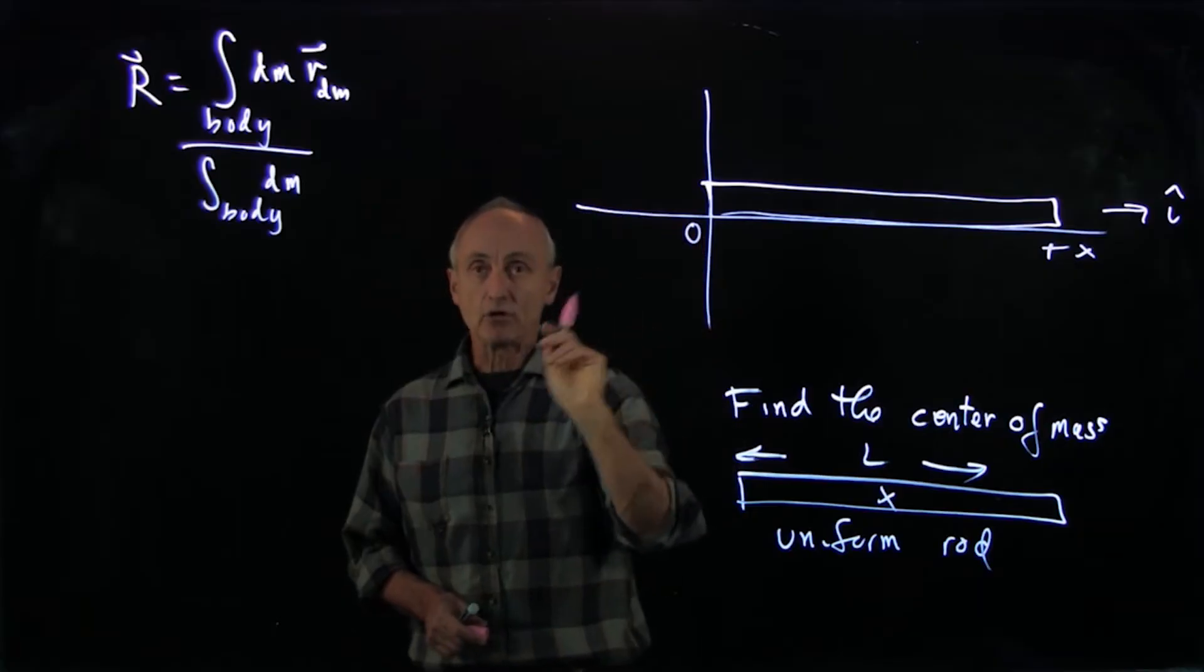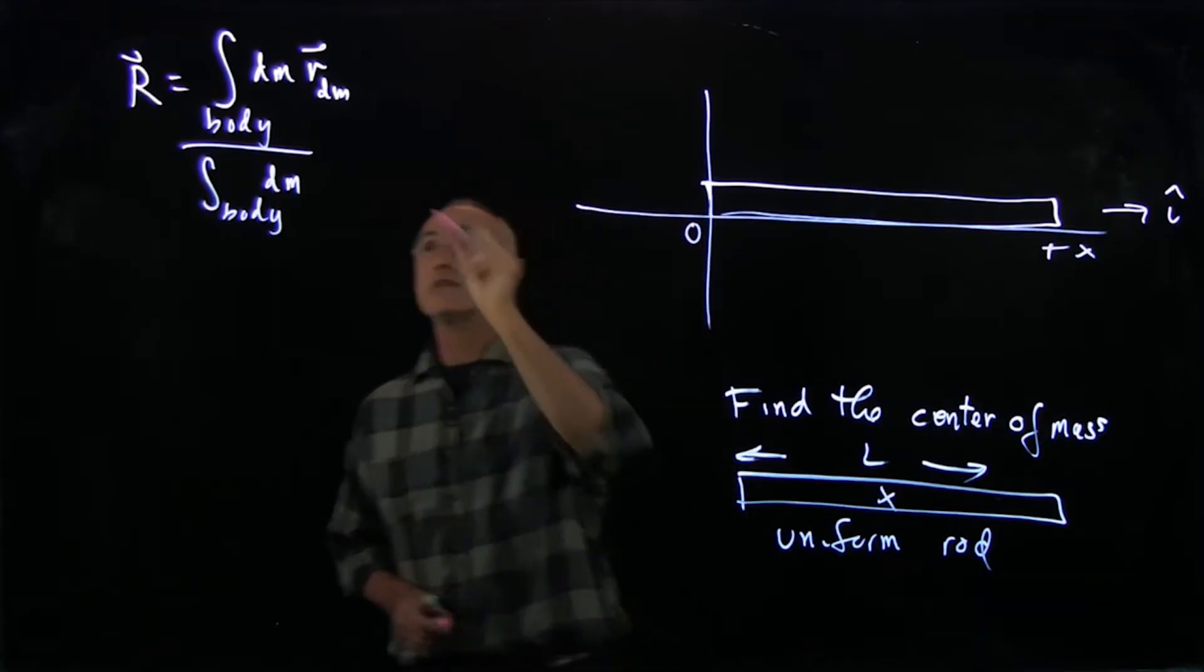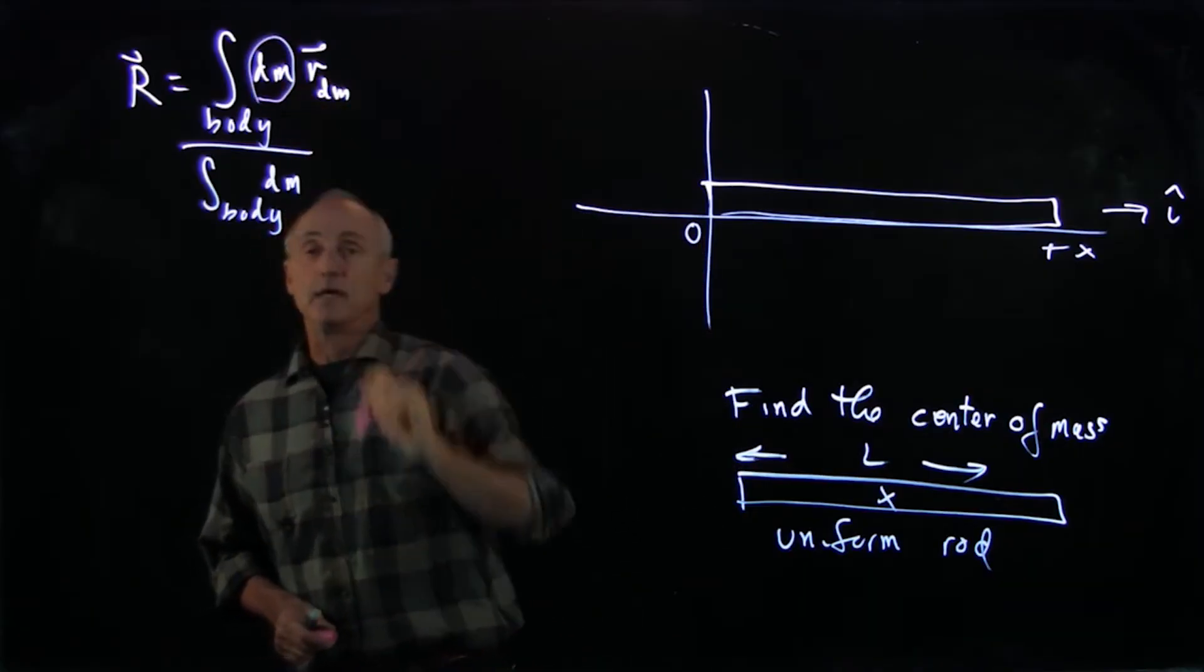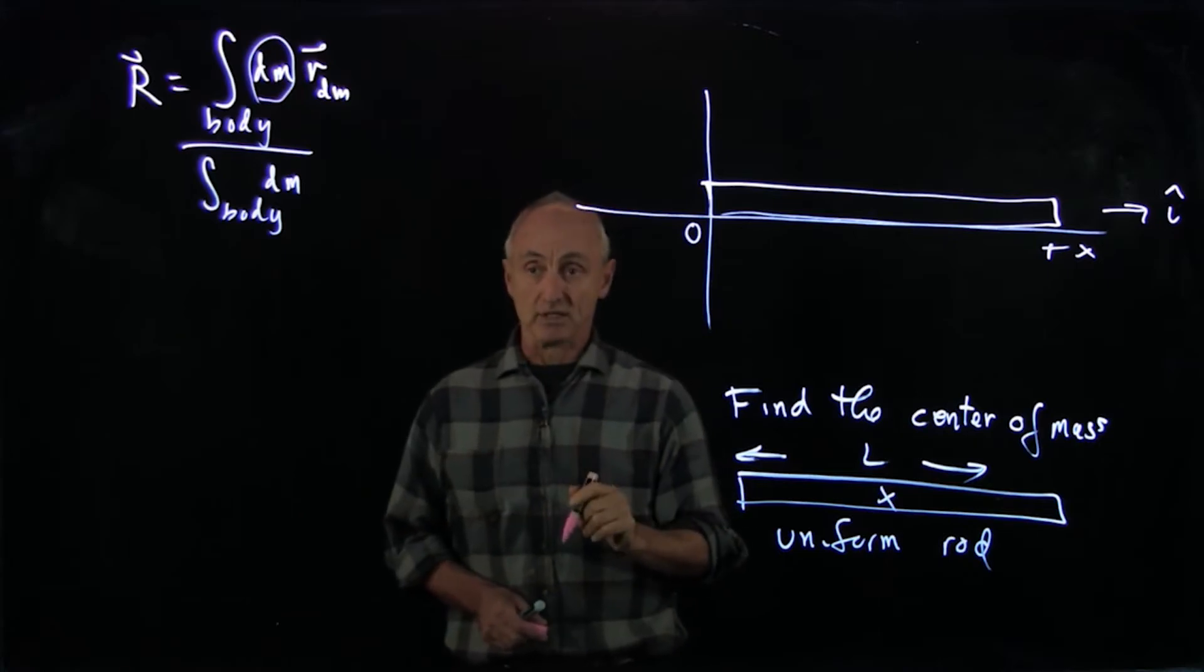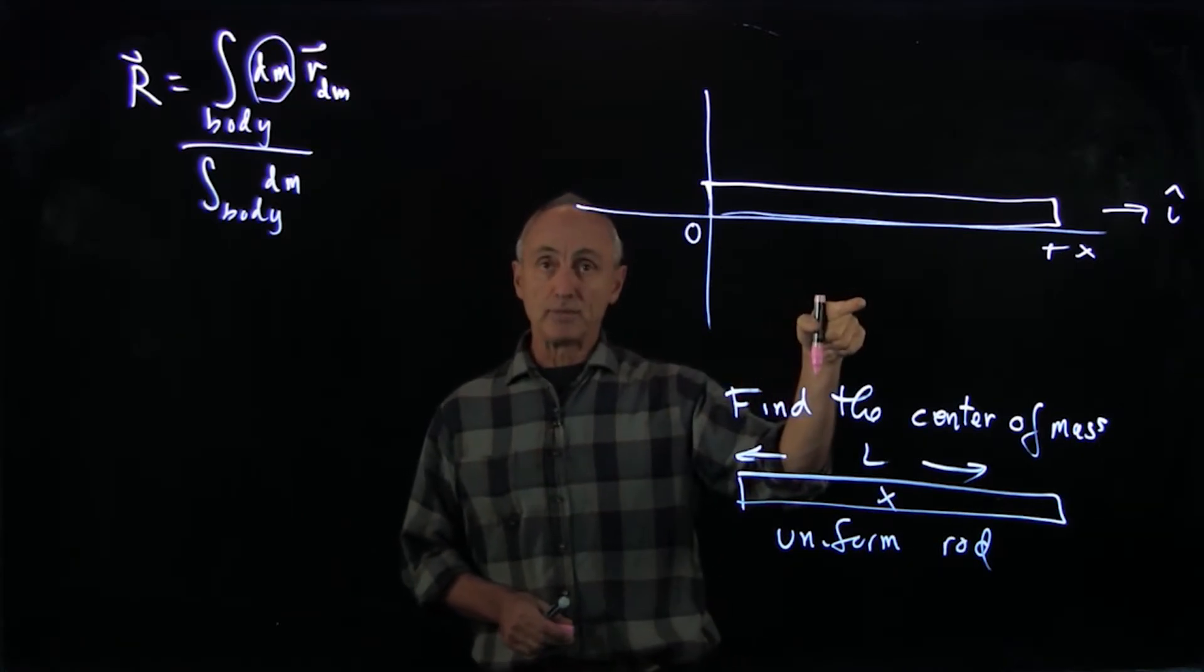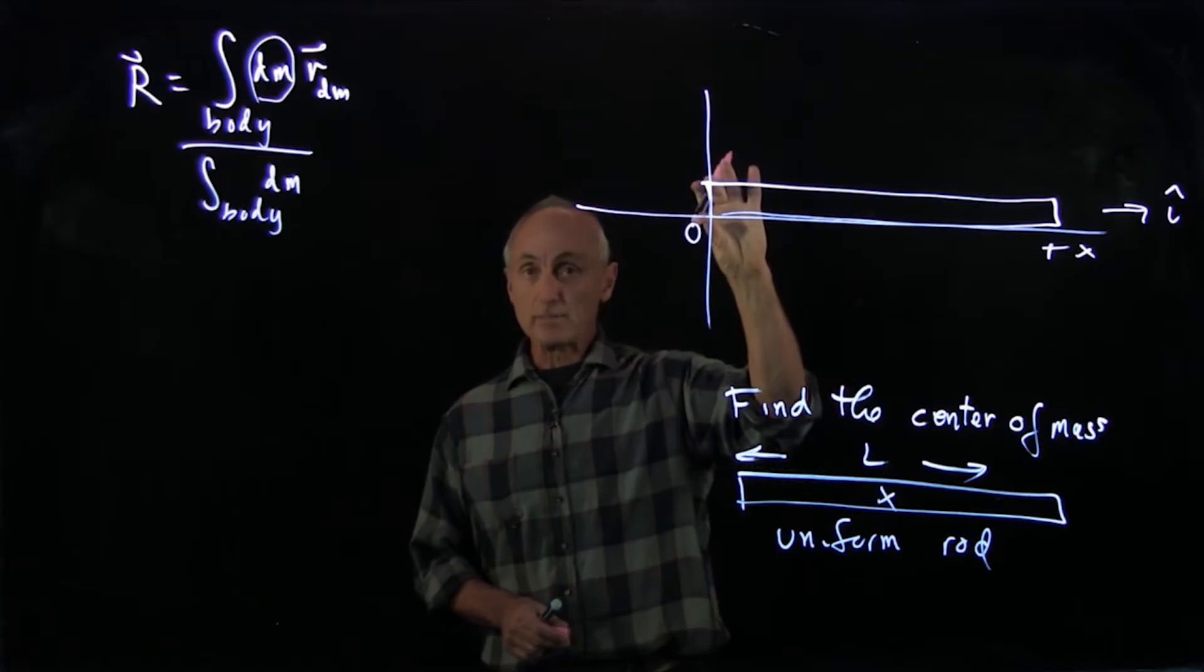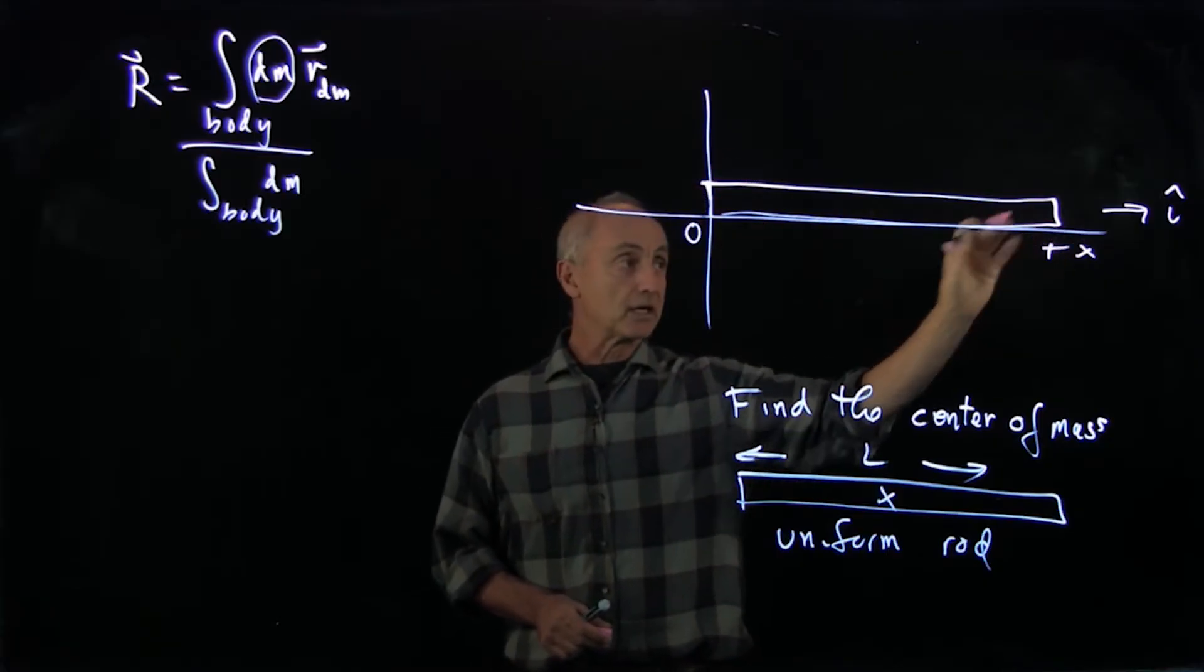Now, my origin. Now, here comes the crucial thing. In this argument, dm is the infinitesimal mass element. And I want to pick that at an arbitrary place in the object. I don't want to pick it at the origin. I don't want to pick it at the end.